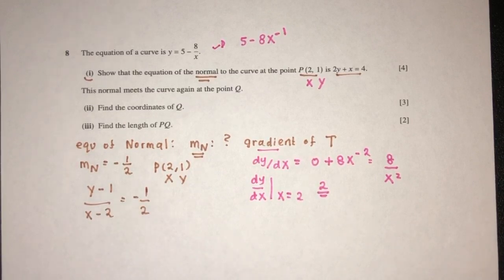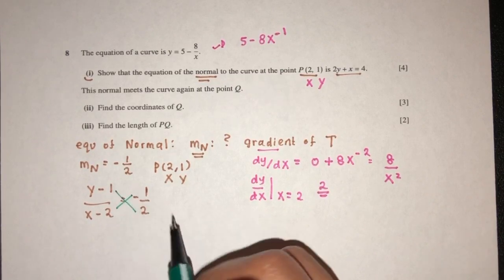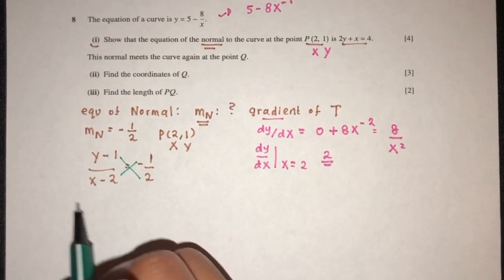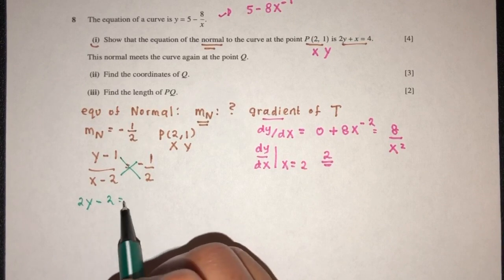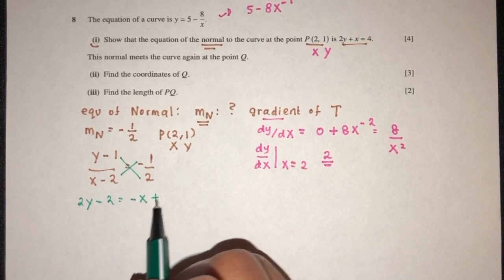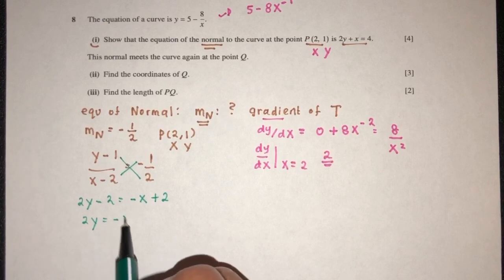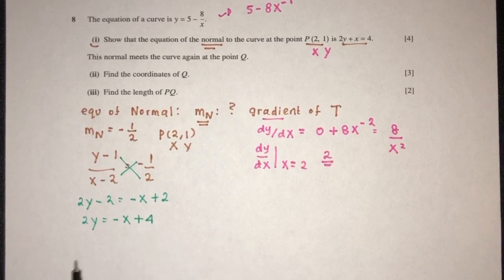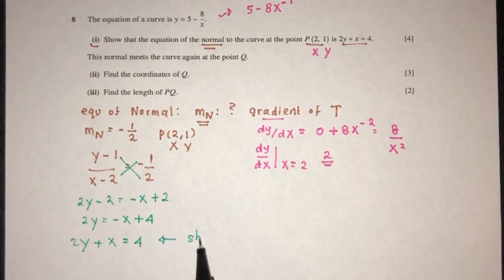Now we can try to cross multiply to see what happens. That will be 2y minus 2 equals minus x plus 2. So 2y equals minus x plus 4. Or 2y plus x equals 4, shown as required.